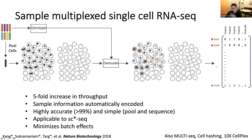Importantly, we also minimize batch effects by randomizing samples to be processed simultaneously. There are other similar approaches including Multi-seq, which uses cholesterol to label cells, and Cell Hashing, which uses antibodies; 10x is also releasing a kit for multiplexing. However, all of these methods incur an additional cost, and in our experience there are issues with running each of them — no barcode is as good as a natural genetic barcode.